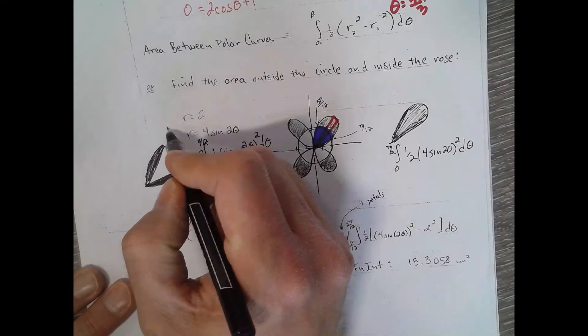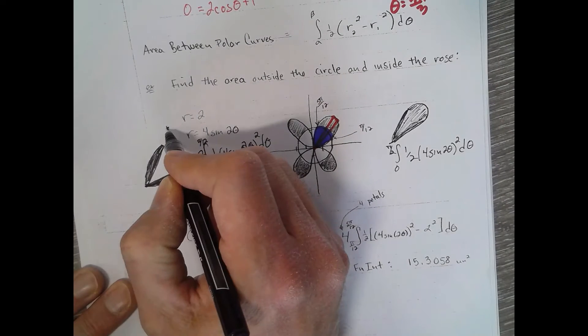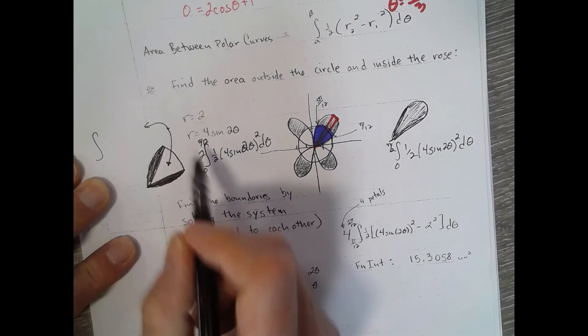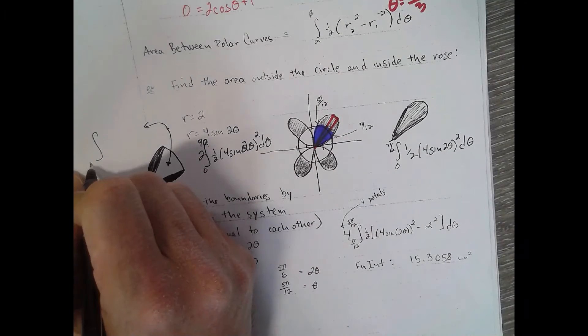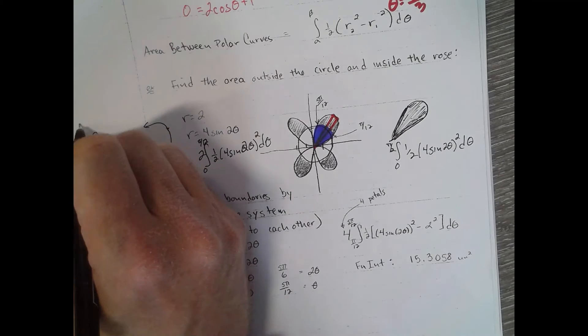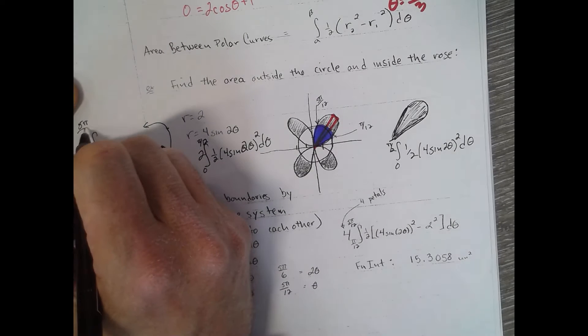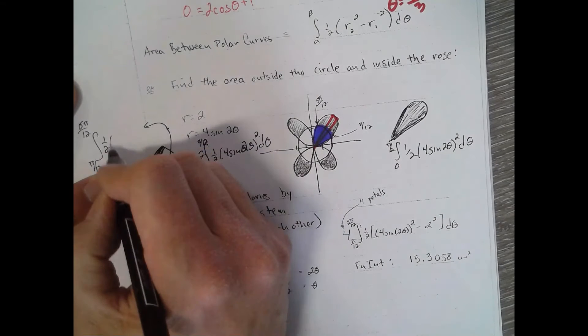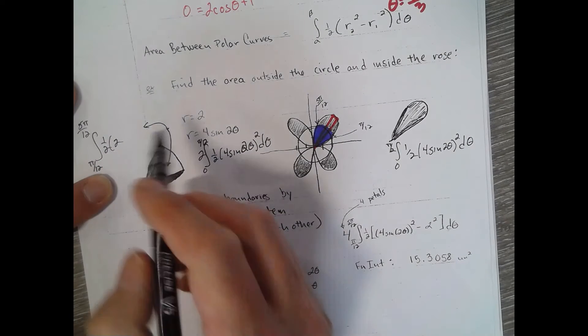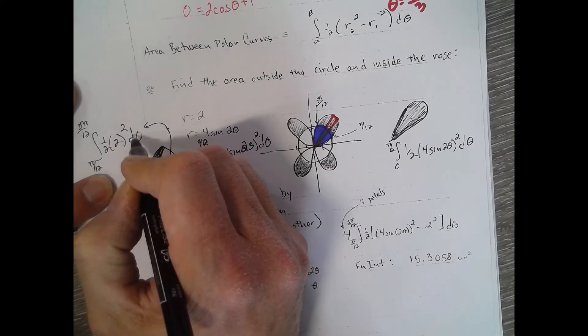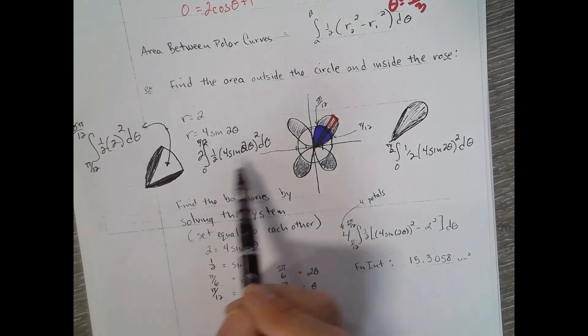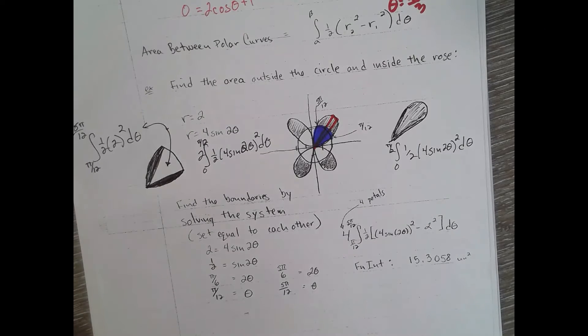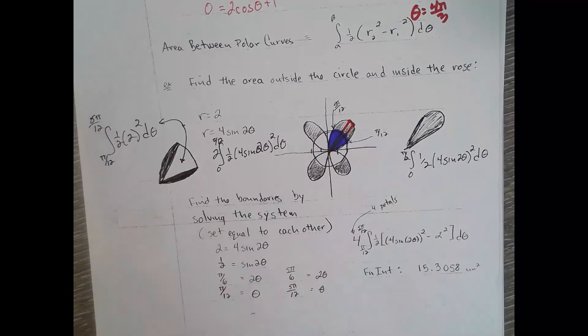And now we just have this sector piece of pizza that is bounded by r equals 2. So this area would be integral from pi over 12 to 5 pi over 12, one half and your r is just 2, r equals 2 squared d theta. That area, that integral plus that integral will also get you the blue. Two ways of doing it.